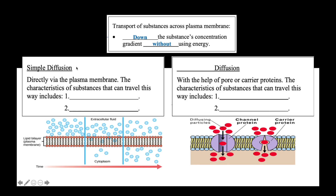The first type of passive transport is known as simple diffusion. When writing down the definition of simple diffusion, we always need to begin here. Simple diffusion refers to the transport of substances across the plasma membrane, down the substance concentration gradient, without using energy, directly via the plasma membrane, as you can see in the diagram here.